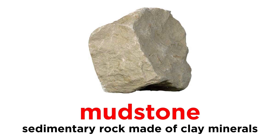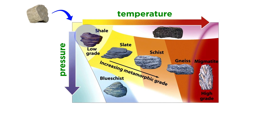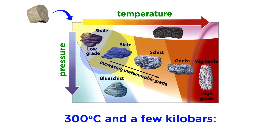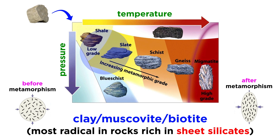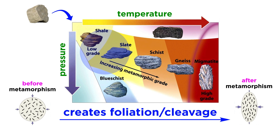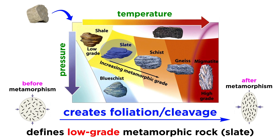To put this into context, let's take a mudstone, which is a sedimentary rock primarily composed of clay minerals, and progressively metamorphose the rock. As we increase the temperature to around 300 degrees Celsius and add a few kilobars of pressure, the platy and elongate minerals will begin to align perpendicular to the direction of greatest stress. This transformation is most radical in rocks that are rich in sheet silicates, like clay, muscovite, and biotite. In rocks, this alignment of platy minerals is said to create foliation, or cleavage, and the beginning of the development of cleavage is what defines a low-grade metamorphic rock, which is called slate.